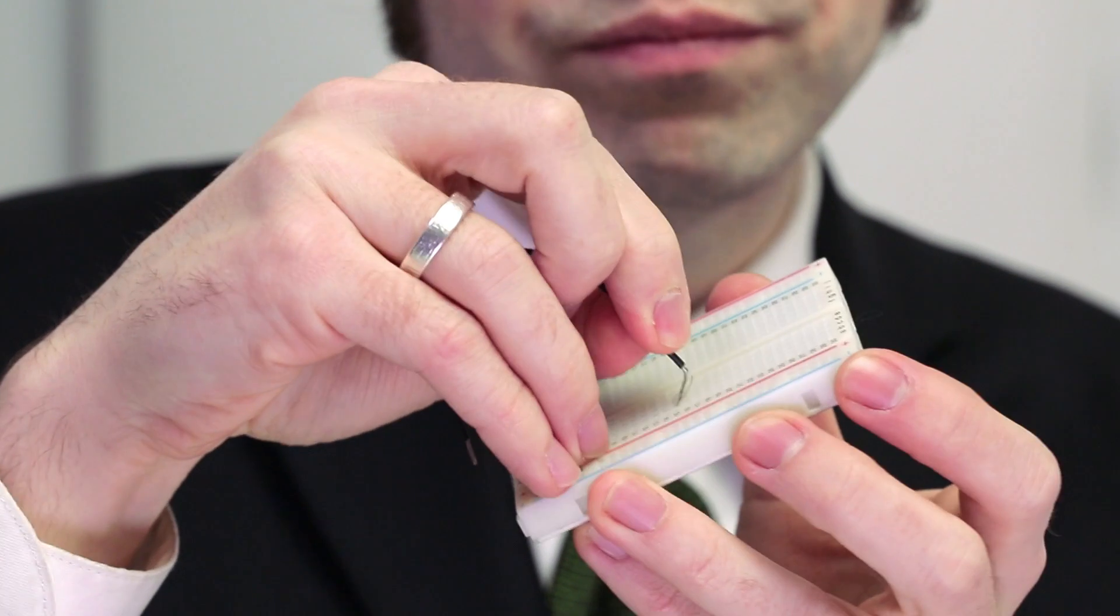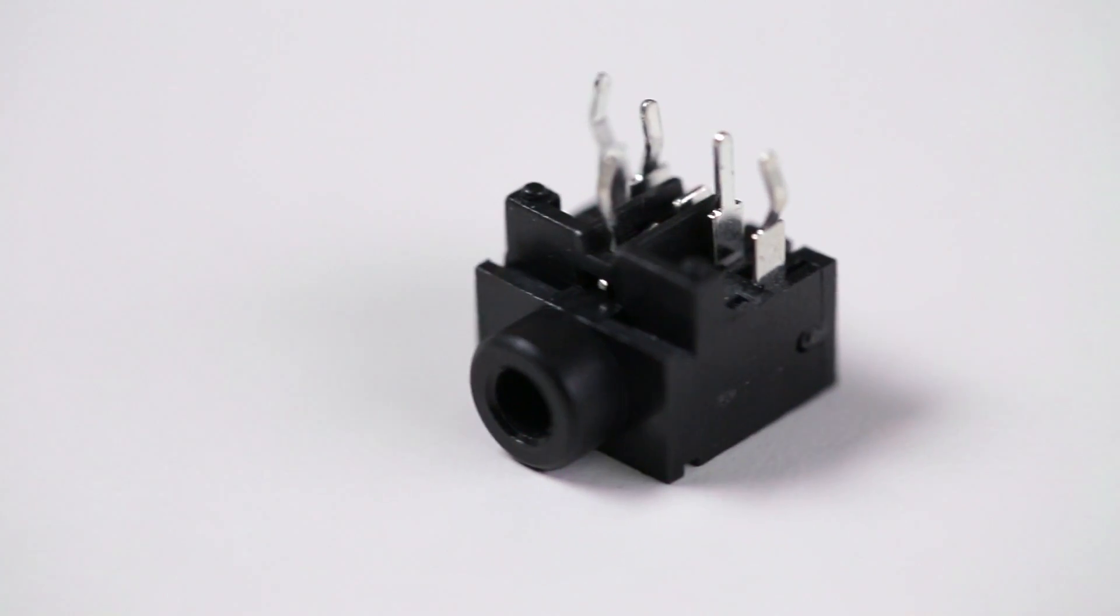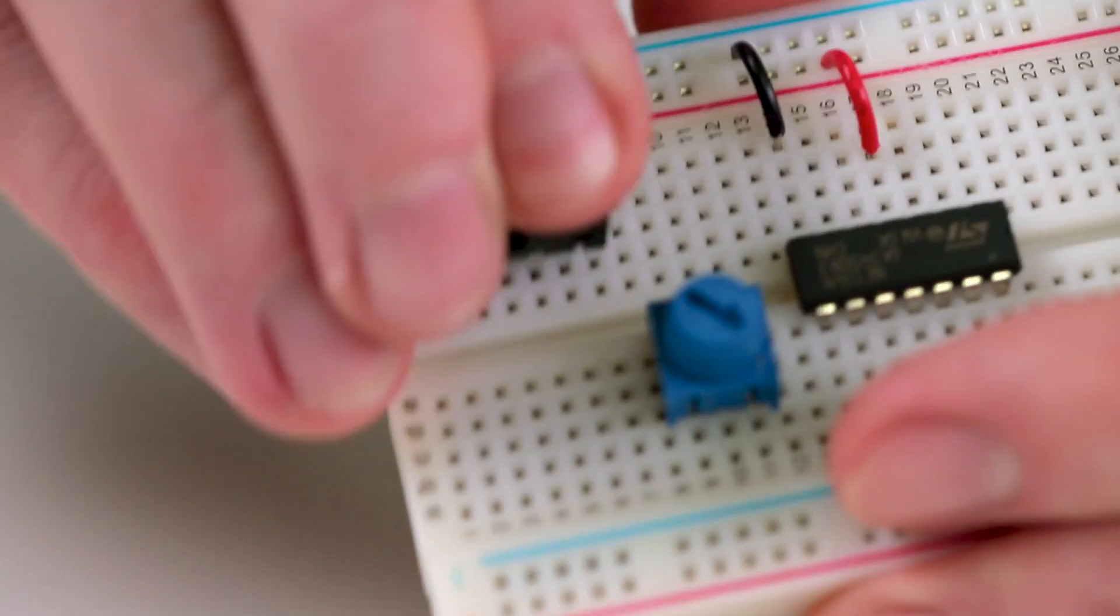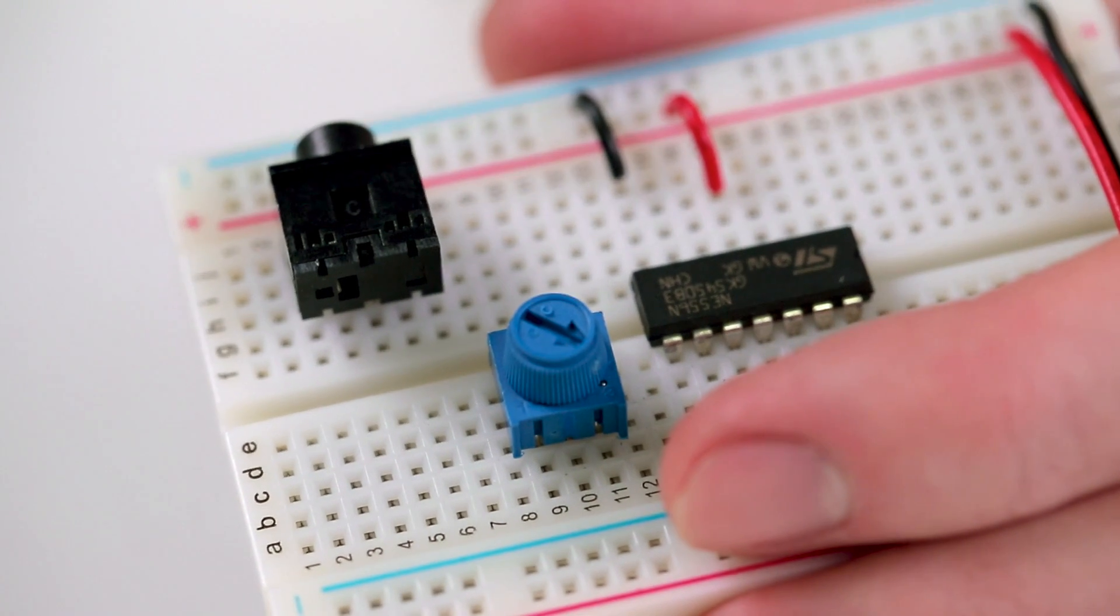Avoid using stranded wire, as it doesn't really work so well. You can find a lot of components which are breadboard friendly, meaning that their lead spacing matches up nicely with a breadboard, so they pop right into place.